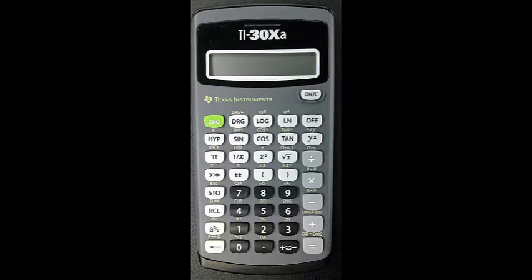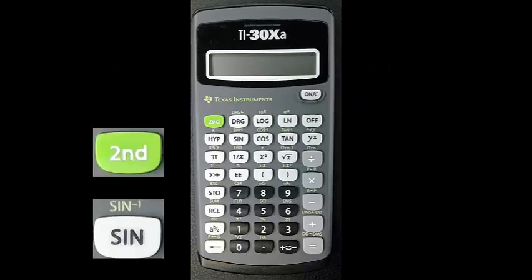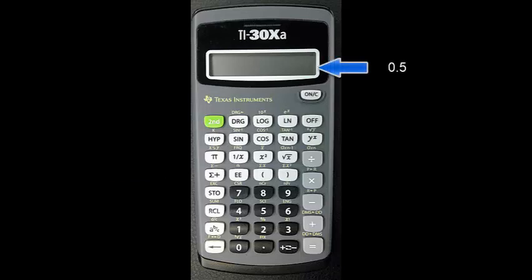The inverse of the sine function can be accessed by pressing the second key, followed by the sine button. With 0.5 still on the screen from our previous steps, press second and sine. The original angle, 30 degrees, should be displayed.